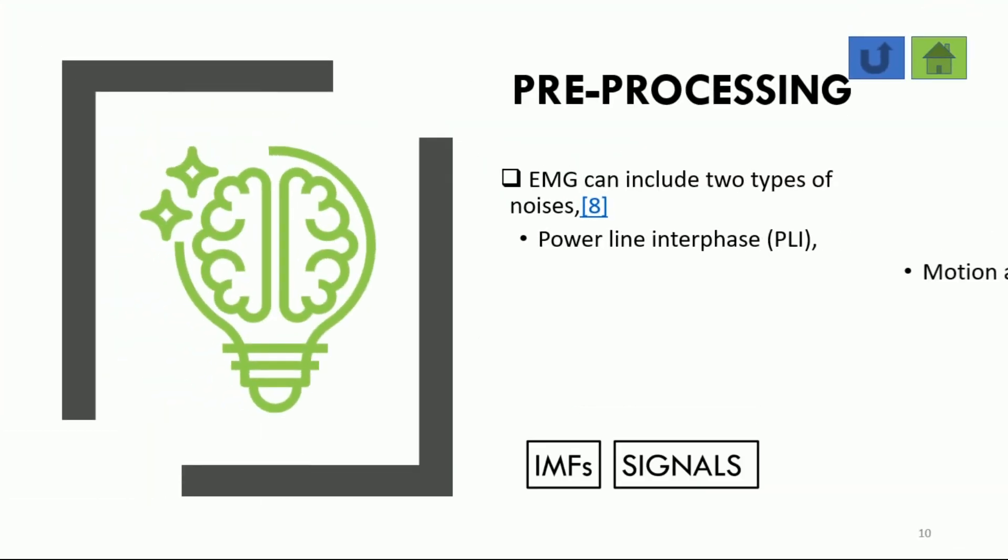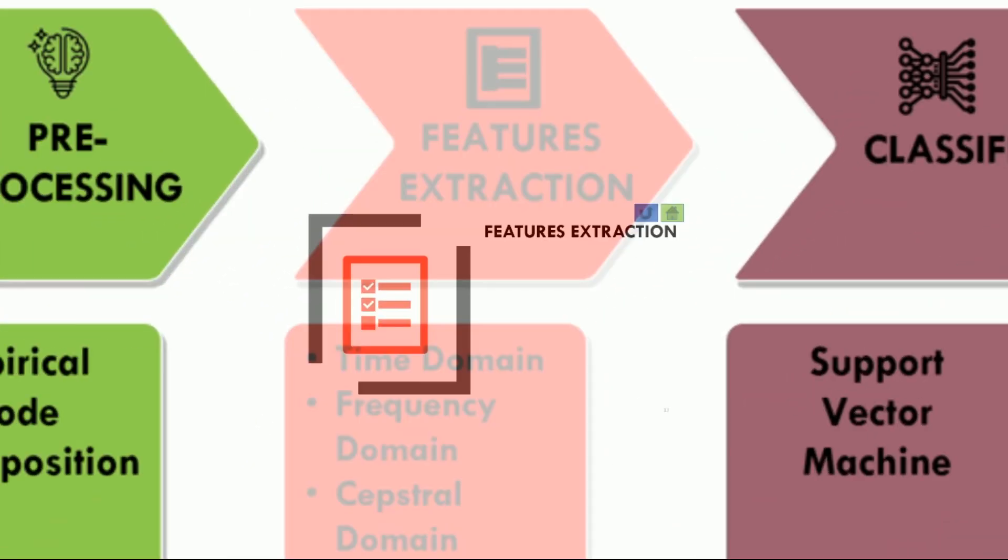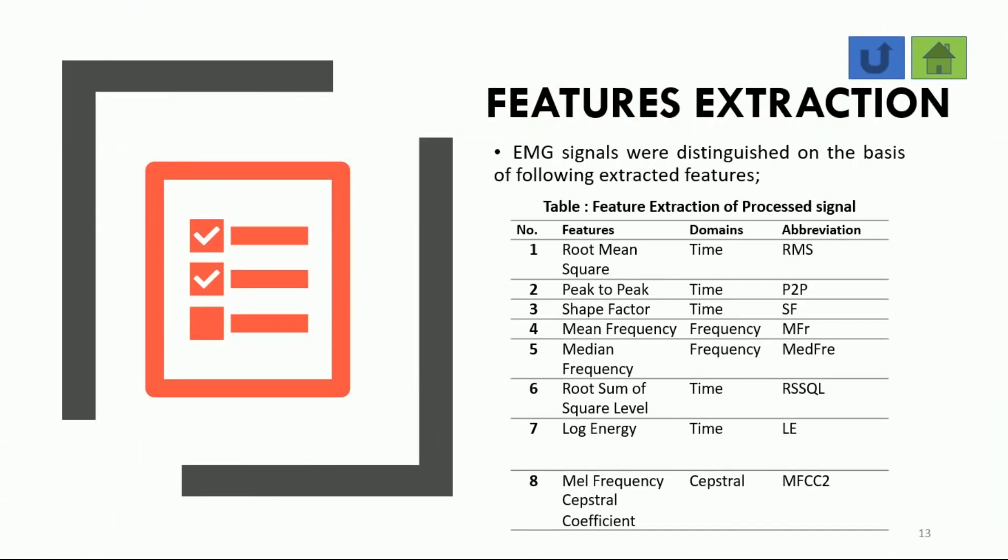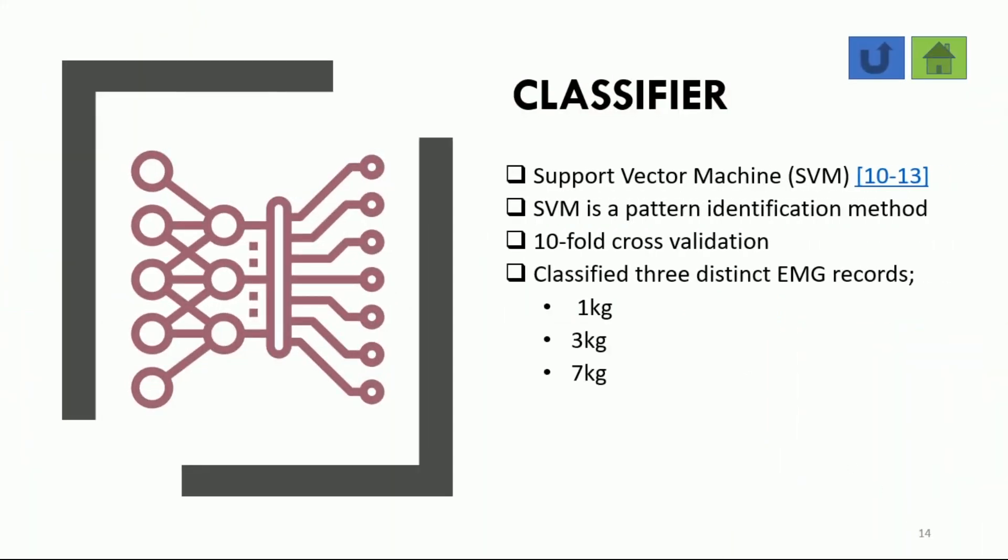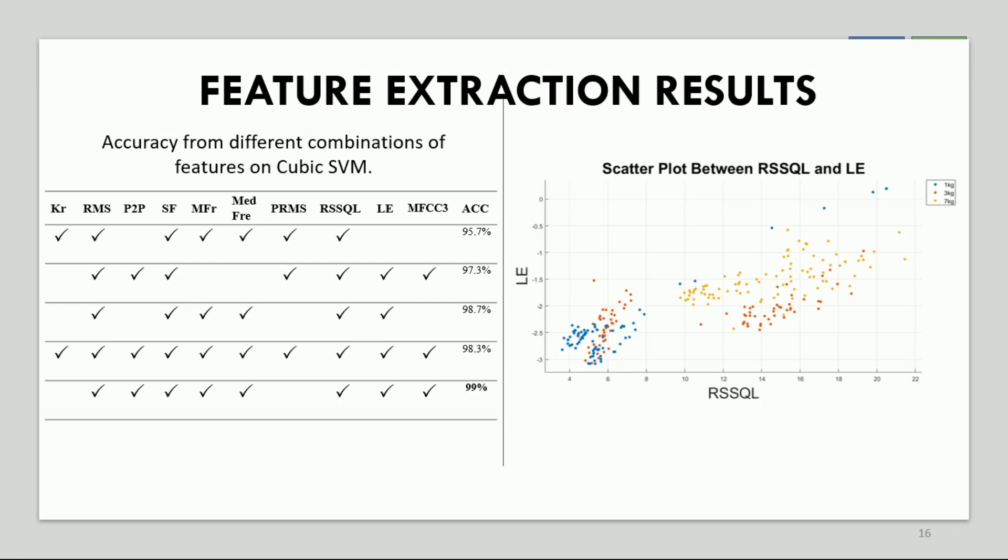Feature extraction is the method for transforming information into a decreased set of feature representation called feature vectors. Features shown in table helped in distinguishing EMG signals for their classes. Classification is the final step of processing EMG signals to distinguish between load classes using extracted features. Support vector machine showed best results among different classifiers. 10-fold cross-validation was used, which is ideal for small datasets. Comprehensive analysis was performed and table shows combination of features and accuracy obtained with these combinations through SVM cubic. This figure shows scatter plot between root mean squared level and log energy.